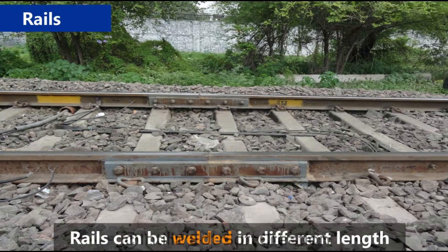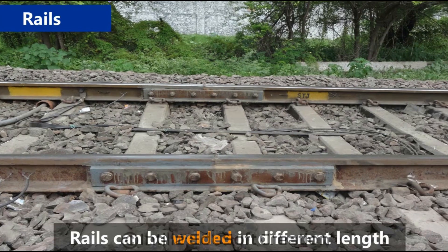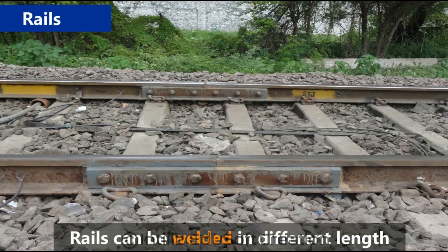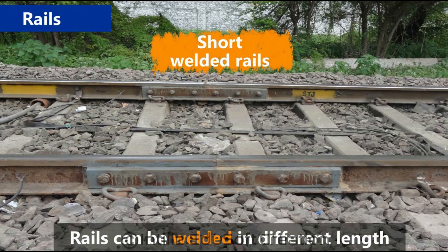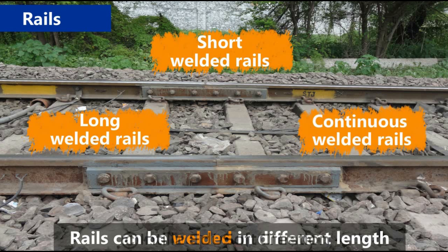The rails can be welded in different lengths — namely, short welded rails, long welded rails, and continuous welded rails.